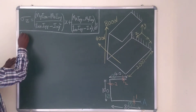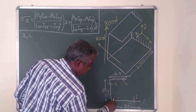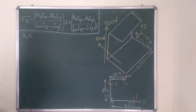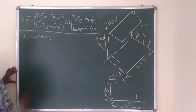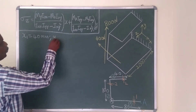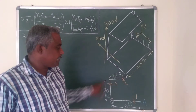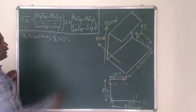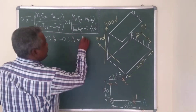For the first section, taking this point as my reference point: X1 = 80/2 = 40 mm. Y1 = 0, since treating this as a line the centroid lies along the reference. Area of Section 1 = 80×1 = 80 mm².